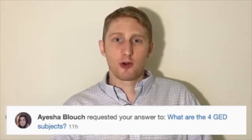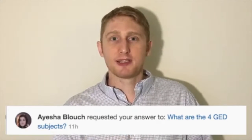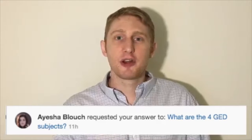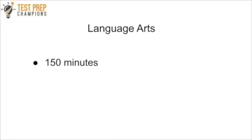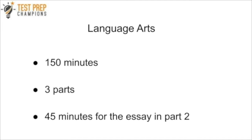A shout out to Ayesha for requesting this topic. Let's get into it starting with GED Language Arts. You'll have 150 minutes to complete the reasoning through language arts section. There are three parts. In parts one and three, you'll answer multiple choice, fill in the blank, drop down, and other types of questions. The second part is the essay, which you'll have 45 minutes to complete. You can check out my video on how to beat the essay — the link is down below in the description.